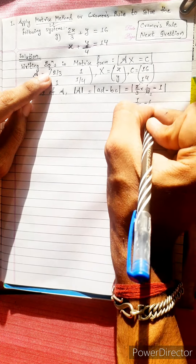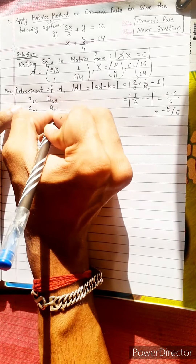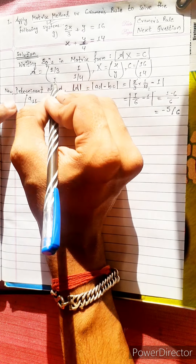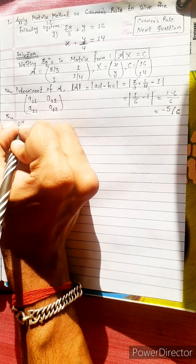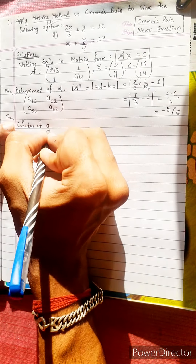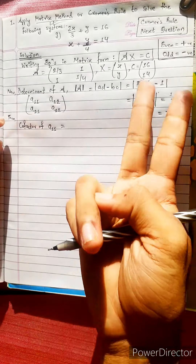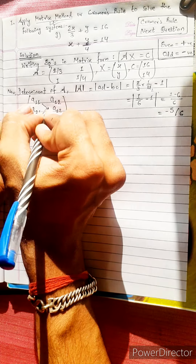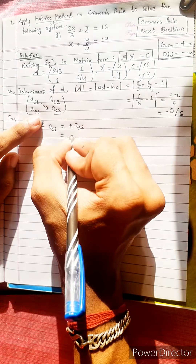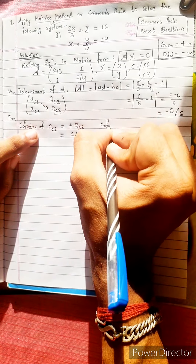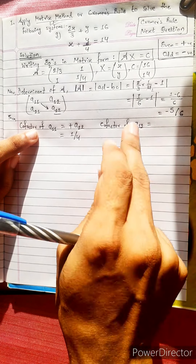Now we find the cofactors. The cofactor matrix represents a1,1; a1,2; a2,1; a2,2. The main element a1,2 is 1/4. Cofactor of a1,2: the index sum is 1 plus 2 equals 3, which is odd.